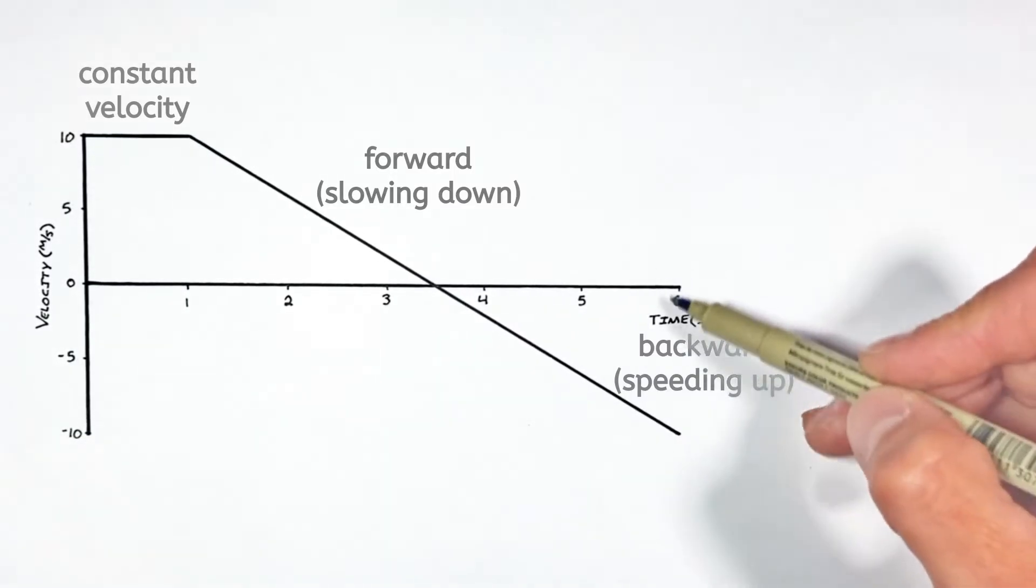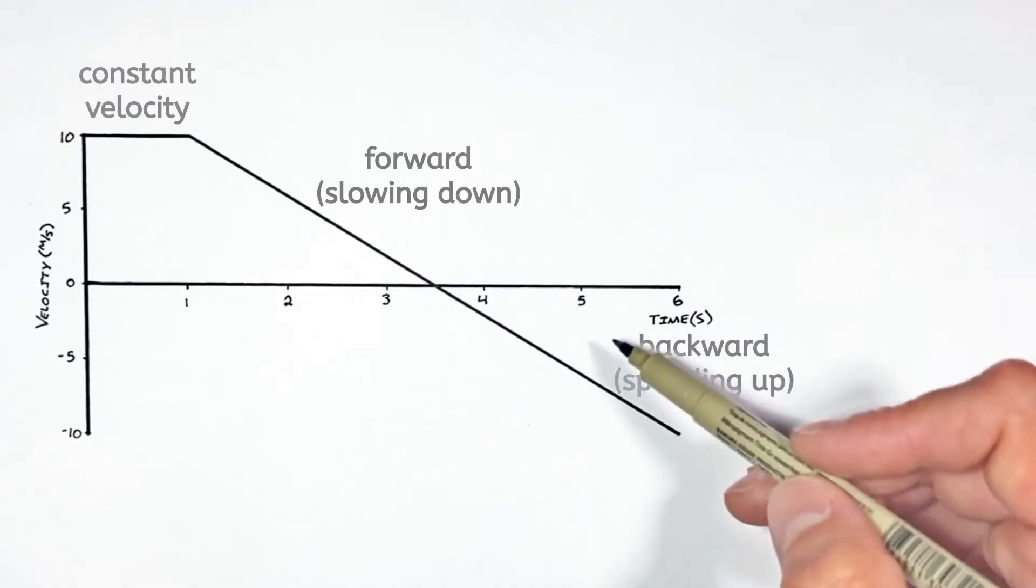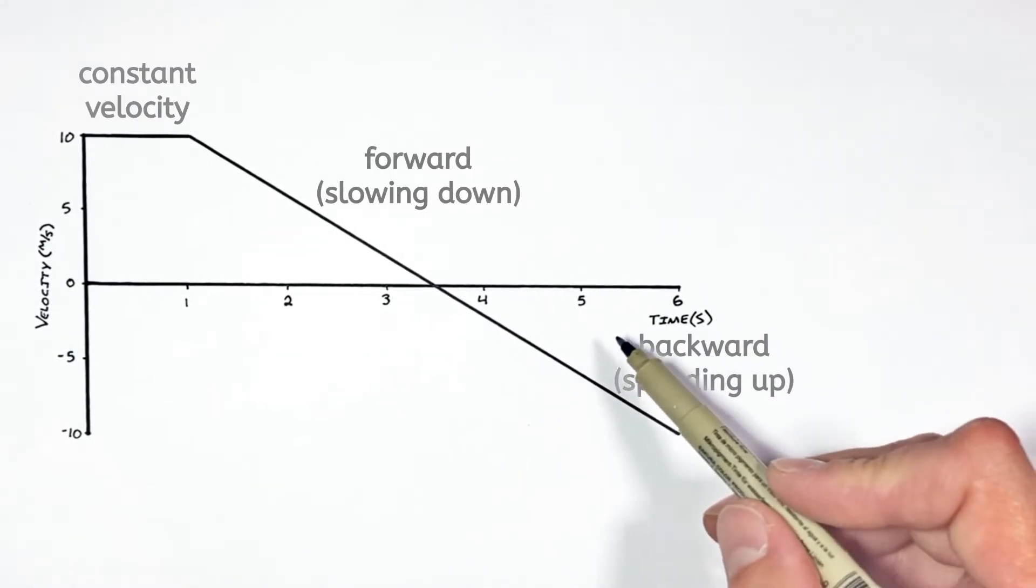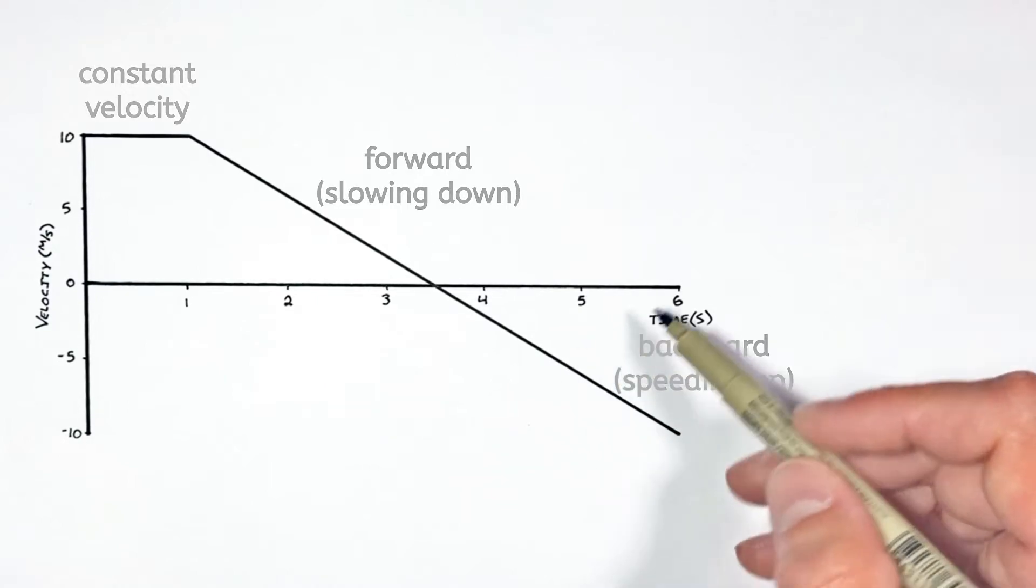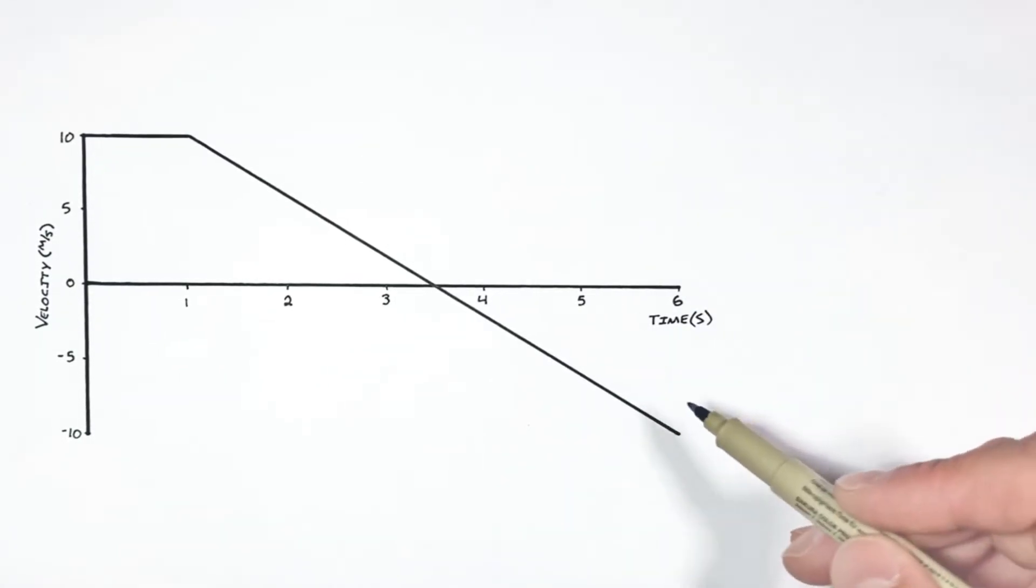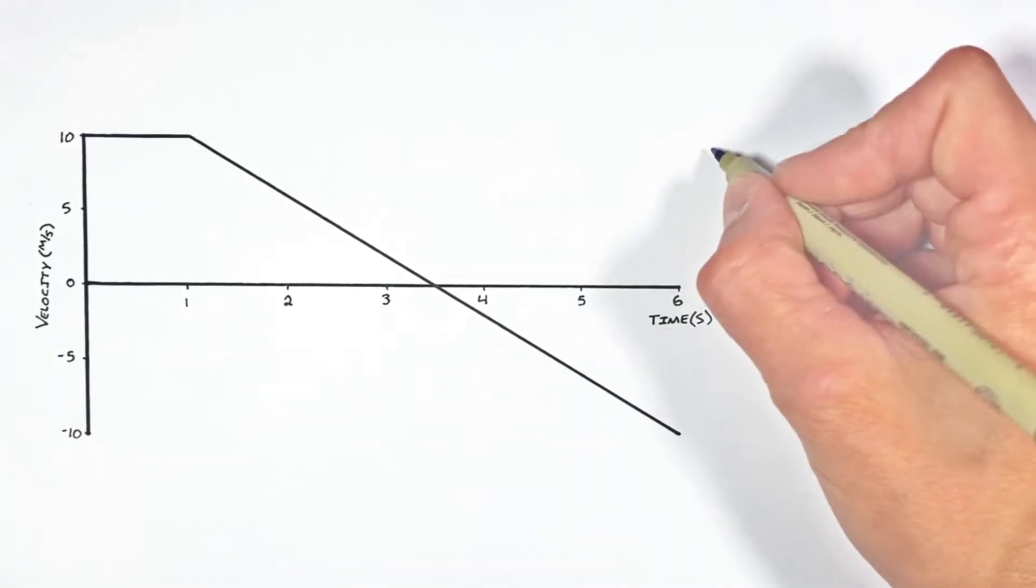And the fact that this object moves backwards is going to become important later on in finding the total displacement of the object. And I'll show you how to deal with that when we get there. Now in order to find the displacement of this object as it moves, we need to know the mathematical relationship between velocity and displacement.